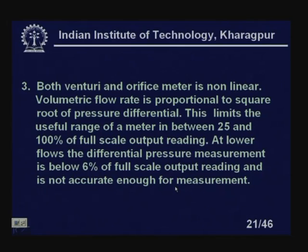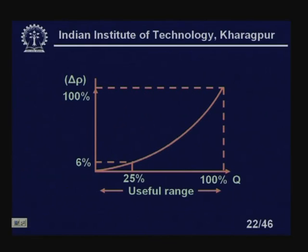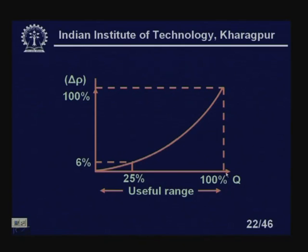Both venturi and orifice meters are non-linear — the volumetric flow rate is proportional to the square root of the pressure differential. This limits the useful range of the meter to between 25 and 100 percent of full scale output reading. At lower flows, the differential pressure measurement is below 6 percent of full scale output and is not accurate enough. The error is quite high at low flow velocities and low at high flow velocities.